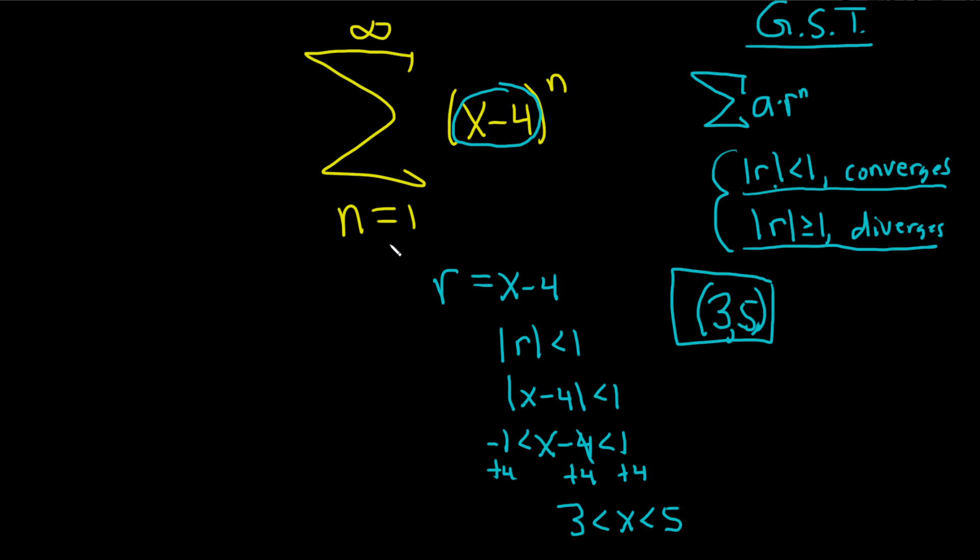Now we have to find the sum, so let me show you how to do that. The way I do it is I use a super cheap formula. So you just take whatever is here and you just plug it in. Just whatever number is there, you just plug it in. So we have a 1, so I'm going to put a 1 where the n is. So we have x minus 4 to the first power.